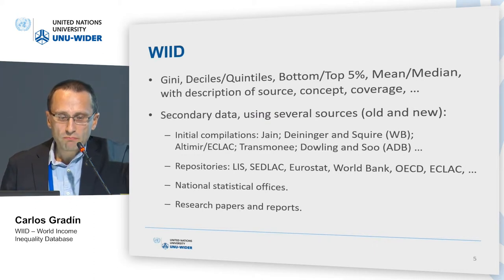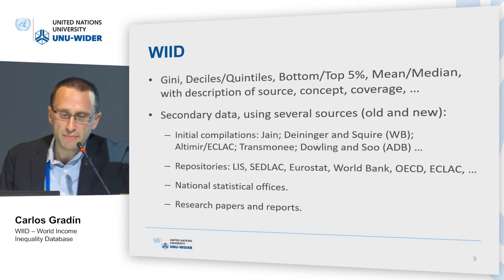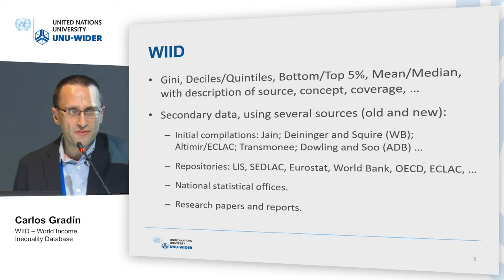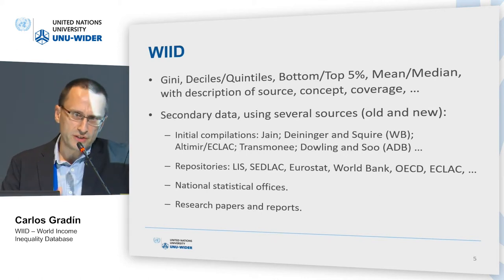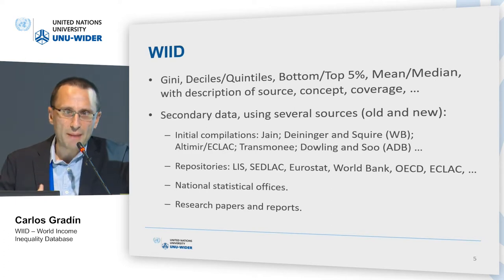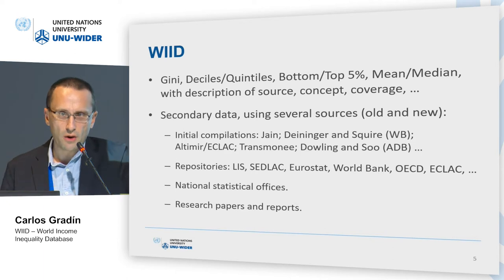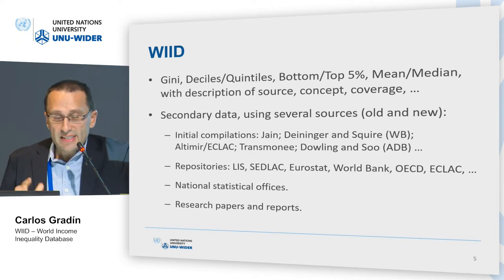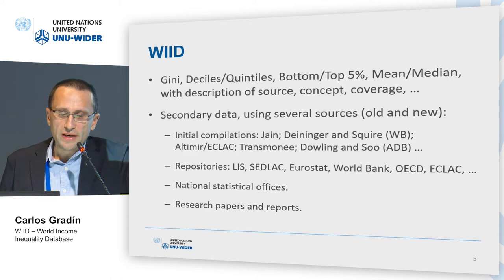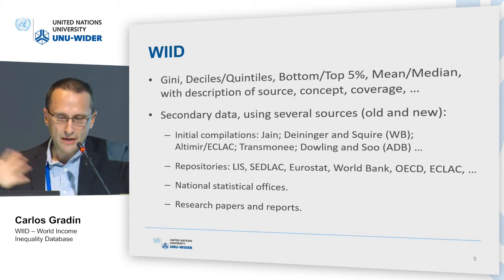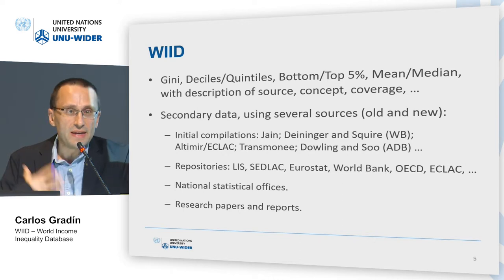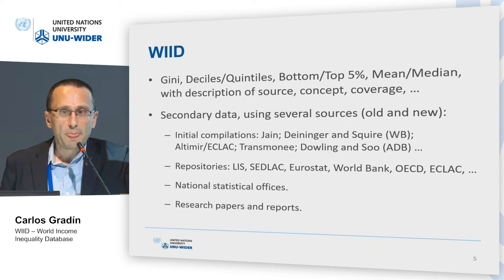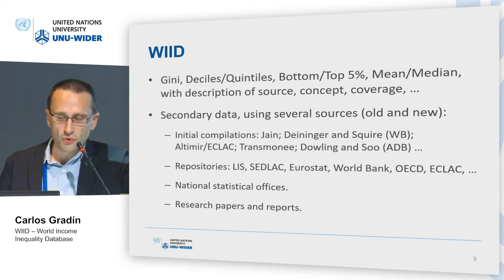In the WIID, we report information on Gini for different countries, along with quintile shares, the bottom and top 5%, median income, and some description of these variables — what is the source, the concept being measured (whether it's income or consumption, per capita or equivalized), the coverage (whole population, rural areas, urban, or part of the country). This is secondary data, so there is no microdata — which can be frustrating for people used to working directly with data — as it is basically Gini coefficients that have been reported by other sources previously.